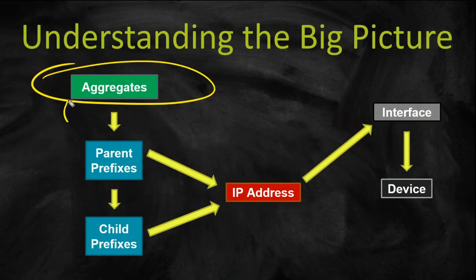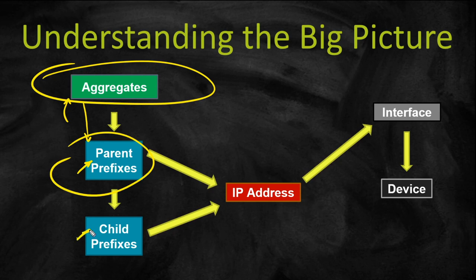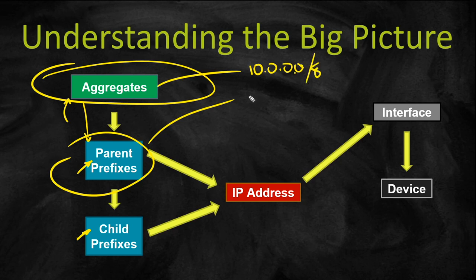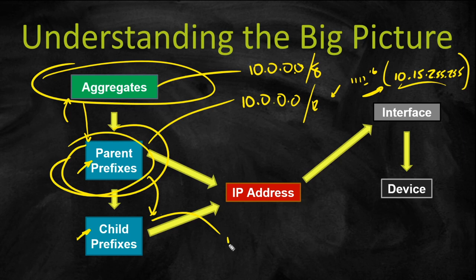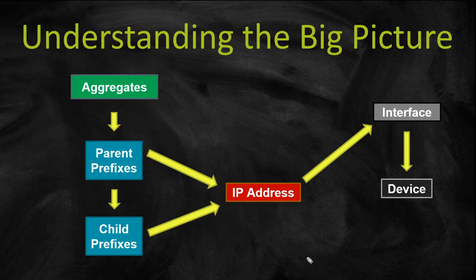Once you create the aggregate, you can drop down to the prefixes, where you get more specific. You can have parent and child prefixes — prefixes within prefixes — and keep nesting them as you go down. So you could have an aggregate of 10.0.0.0/8, and inside of there your data center might use 10.0.0.0/12, which would cover 10.0.0.0 through 10.15.255.255 as your first major prefix. Then underneath that you might go into 10.0.1.0/24 as child prefixes, and you could keep going underneath that. That's the hierarchy — the bigger picture of how IP addresses are managed.